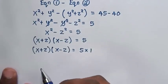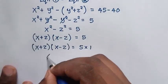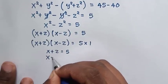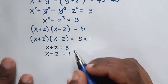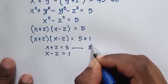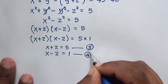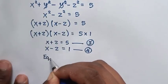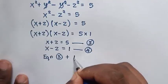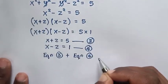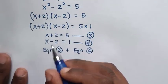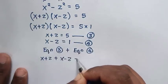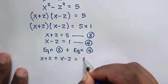Then from here, we have two cases: x plus z is equal to 5 — we call this equation 3 — and x minus z is equal to 1 — we call this equation 4. Then, to find the value of x, we add equation 3 plus equation 4. So here it will be x plus z plus x minus z is equal to 5 plus 1, which is 6.